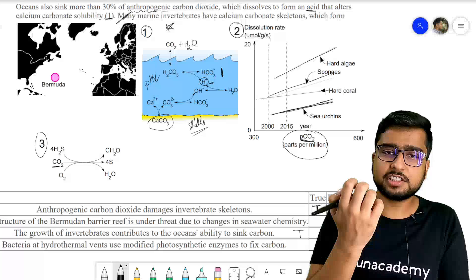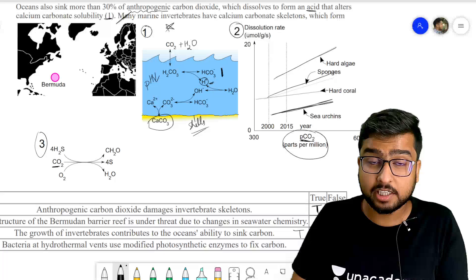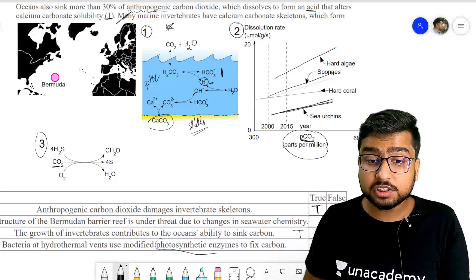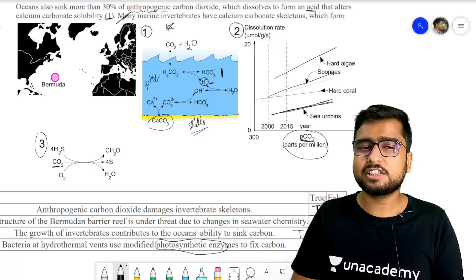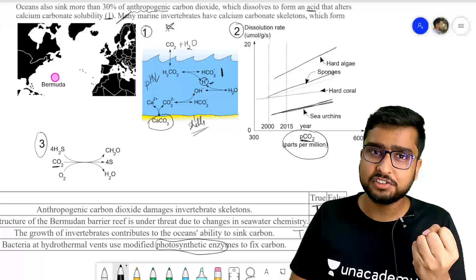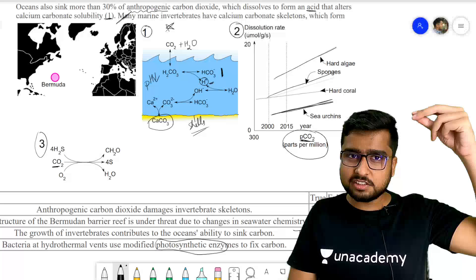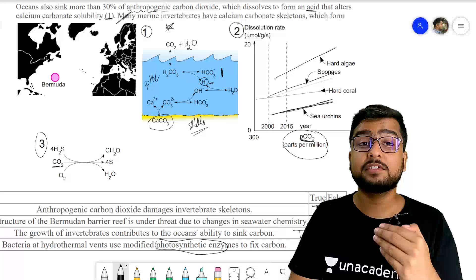Bacteria at hydrothermal vents use modified photosynthetic enzyme to fix carbon. Hydrothermal vents occur deep in the ocean. Modified photosynthetic enzymes? Beta, that deep you don't have any chance of sunlight coming in. Aapke paas sunlight to aayegi nahi, to photosynthetic enzymes are not going to help you. Photosynthetic enzymes are not going to help you.